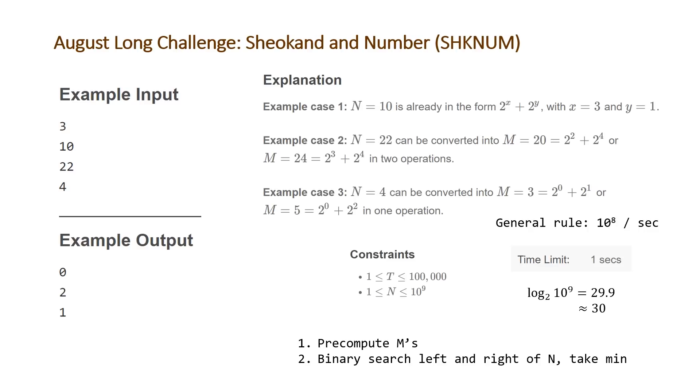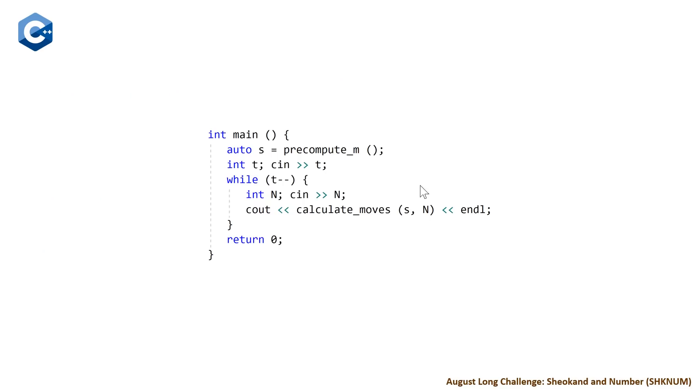Let's take a look at the code. Here is our C++ solution. You can see on the first line we are pre-computing our values m, then reading in the number of test cases t. For each test case, we read in our integer n and calculate the number of moves using the set we pre-computed. Let's look at our two functions, pre-compute and calculate moves.